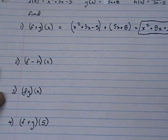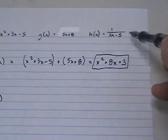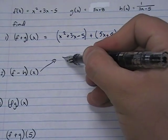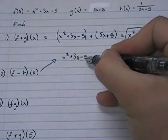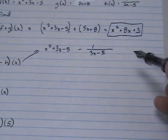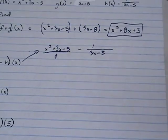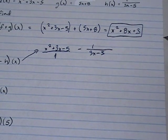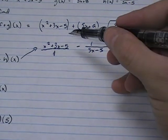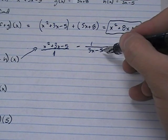Our second problem says f minus h. This will be a little more complicated, so I'm going to give myself a little room. f minus h, which is 1 over 3x minus 5. To subtract these two, we need a common denominator. The denominator over here is just 1. We're going to need the common denominator, which is 3x minus 5. So we have x squared plus 3x minus 5 over 1. The LCD is 3x minus 5.